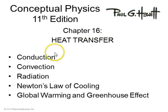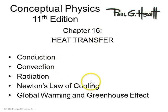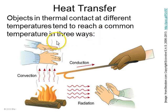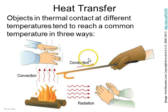Chapter 16 is all about heat: conduction, convection, and radiation. We'll also talk about Newton's Law of Cooling, Global Warming, and the Greenhouse Effect. Any objects that are in thermal contact and have different temperatures will have heat flow from the higher temperature object to the lower temperature object. There are three modes of heat transport.